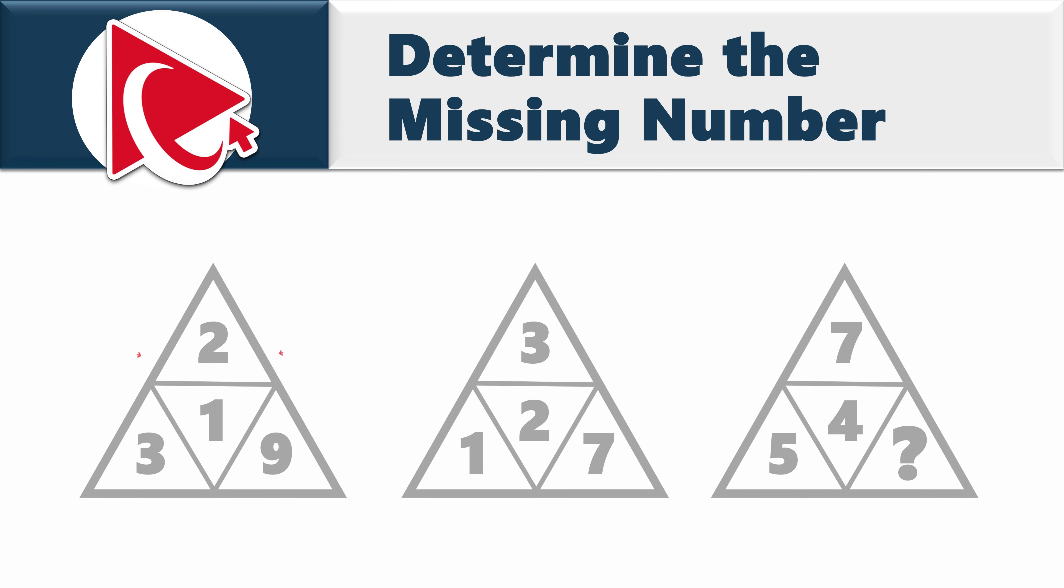You're presented with three triangles. Triangles have numbers inside. The first triangle has number 1 in the middle and numbers 2, 9, and 3 on the sides. Second triangle has number 2 in the middle and numbers 3, 7, and 1 on the sides. And then the third triangle has number 4 in the middle and numbers 7 and 5 on the sides, and in the bottom right corner it has the missing number which you need to calculate and select out of four possible choices.